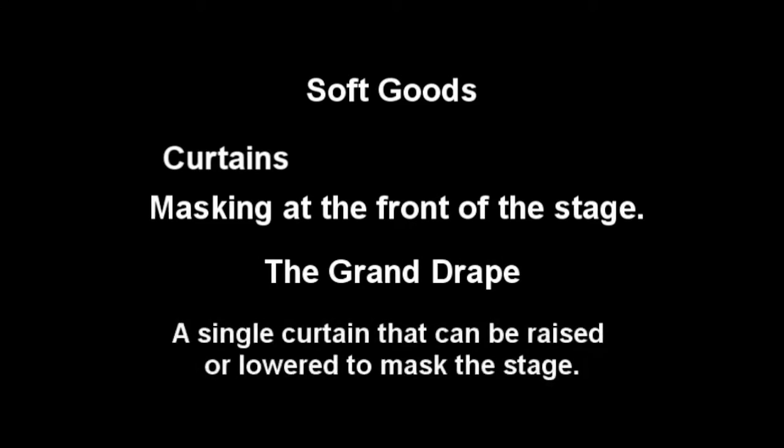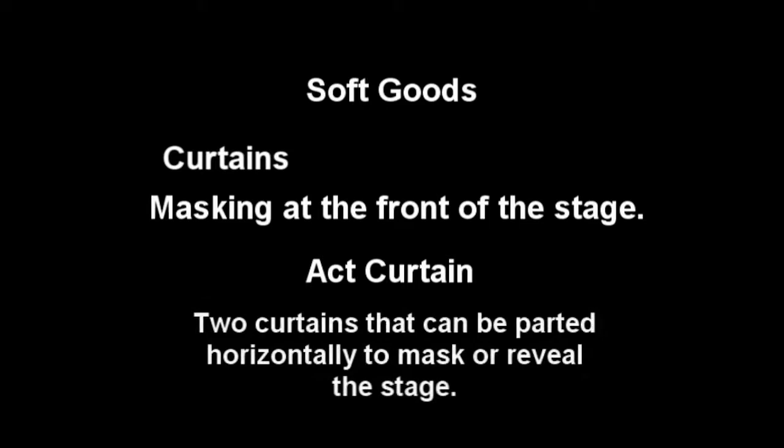There are typically one of two soft goods used for masking at the very front of the proscenium arch. Those are either the grand drape, which is a single curtain that hangs in front of the proscenium arch and can be raised or lowered vertically in front of the stage, or the act curtain, which is made up of two curtains which can be parted horizontally to reveal the stage.